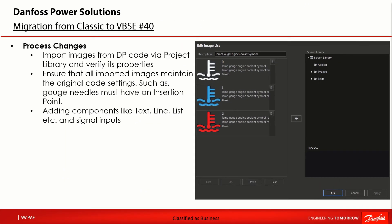Similar to text lists, there could also be a need to have image lists in the screen editor. For example, components such as temperature gauges could have three values to show on screen — red if temperature is high, white if normal, and blue if the temperature is low. Therefore, create an image list in the screen library by right-clicking on the screen library and selecting new image list. This will open a pop-up of edit image list where you can choose images to be added to the image list.